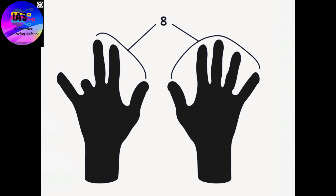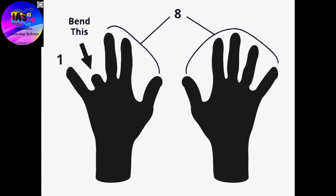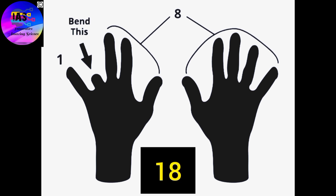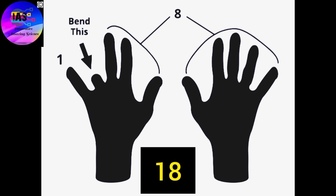Then count the fingers to the right of the bent finger — this is your second digit, or the ones place. We can see 1 on the left and 8 on the right. Put the two digits together and you get 18. This method can be used for up to 9 times 10 only. Wasn't that cool and easy?